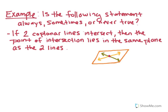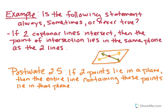As obvious as that may seem, that that intersection would lie in the same plane as those two lines, in mathematics you always need a concrete reason as to why something happens. In our textbook, we actually have a postulate that will help us prove this — Postulate 2.5, though that number may change based on different textbooks. The postulate says that if two points lie in a plane, then the entire line containing those points lies in that plane.